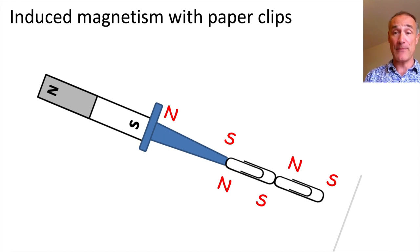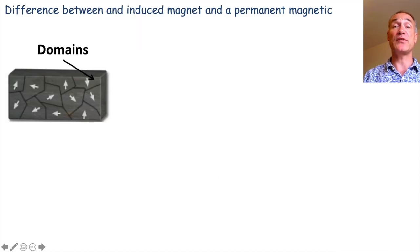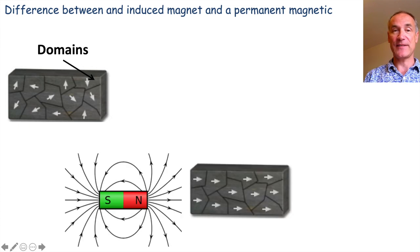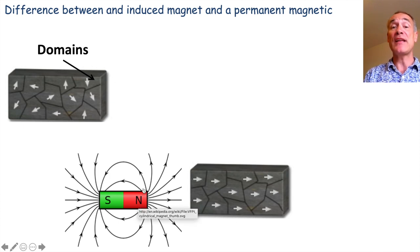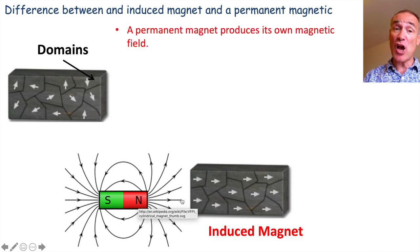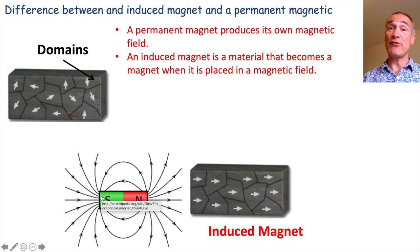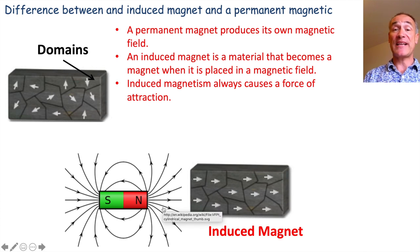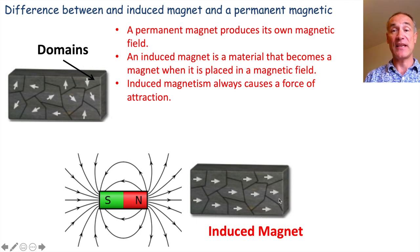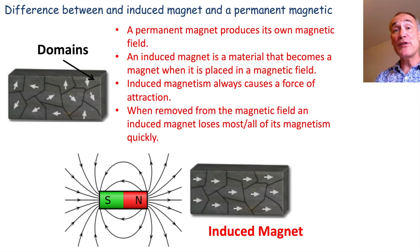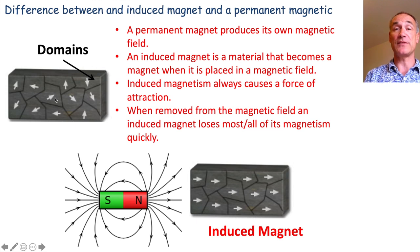So that is what induced magnetism is. What are the differences between an induced magnet and a permanent magnet? A permanent magnet produces its own magnetic field. An induced magnet is a material that becomes a magnet when placed in a magnetic field. Induced magnetism always causes a force of attraction — so an induced magnet can only ever attract something, it can't repel it. And lastly, when we remove the magnetic field the induced magnetism is lost and it goes back to those jumbled up domains again.